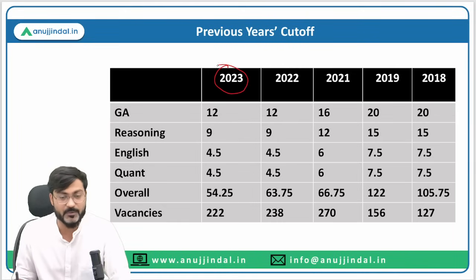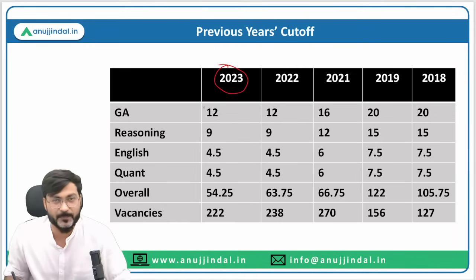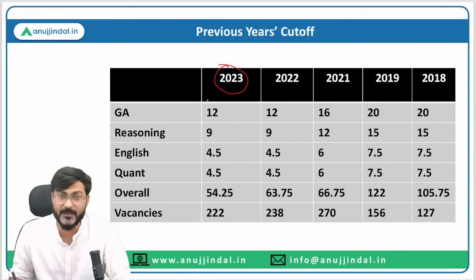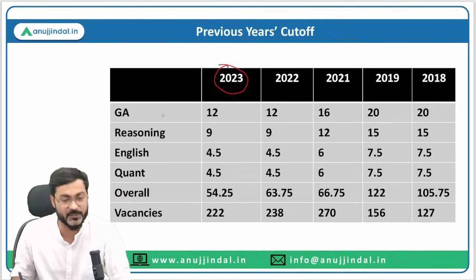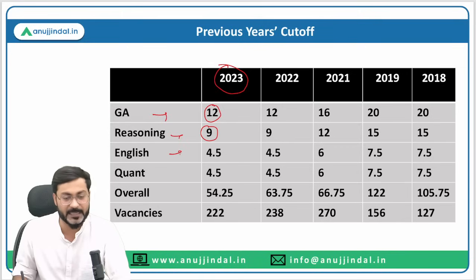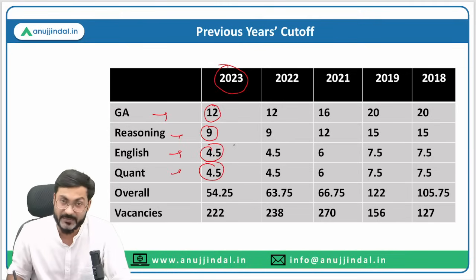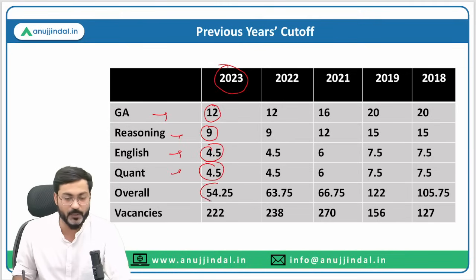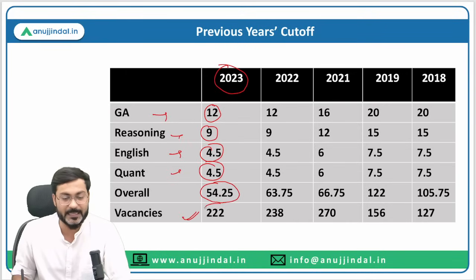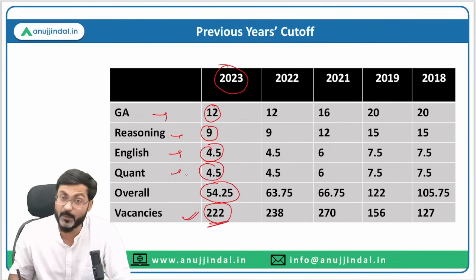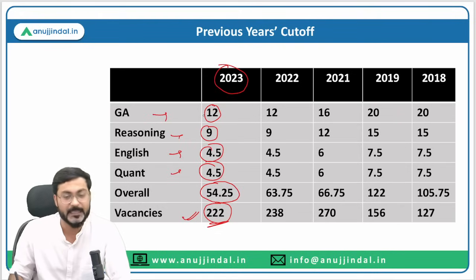If I talk about the year 2023, it was the toughest paper. The total overall cutoff was 54.25. The number of vacancies in Grade B General stream was 222.